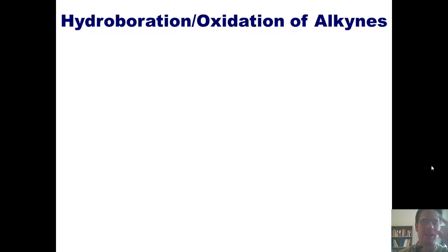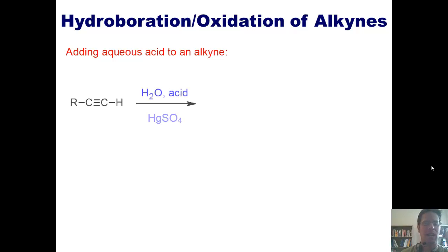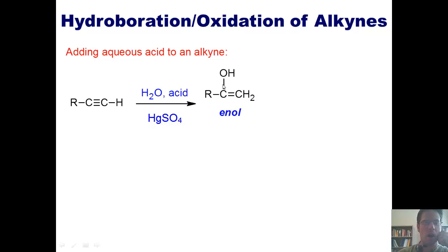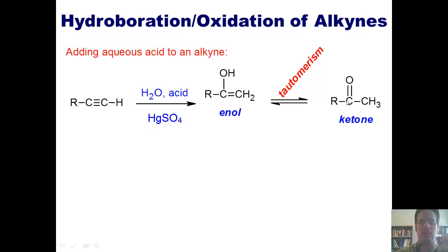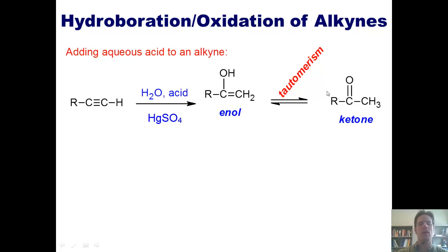What happens if you treat an alkyne under similar conditions? When you treat an alkyne with aqueous acid and mercury sulfate, it ends up placing an OH in the product on the internal carbon — the one that would generate the more stable carbocation intermediate — which is completely analogous to what occurs with an alkene. This molecule is an enol, with the hydroxyl group attached to one of the two doubly bonded carbons. Enols instantly tautomerize to form a ketone, and the equilibrium strongly favors the keto form.